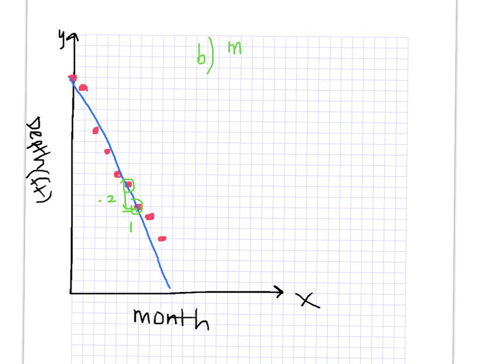So the m is negative 2 and the b is right here at 0, 20. So the formula is y equals negative 2x plus 20.